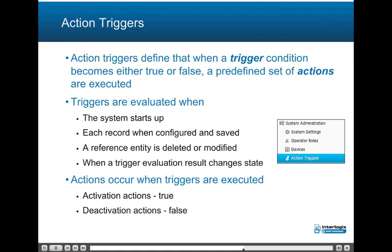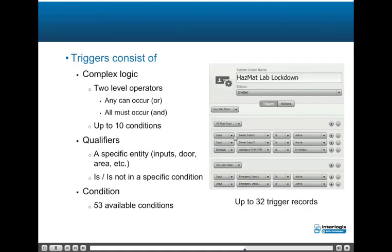Action triggers define that when a trigger condition becomes either true or false, a predefined set of actions are executed. Triggers are evaluated when the system starts up, each record is configured and saved, a reference entity is deleted or modified, or when a trigger evaluation result changes state. Actions occur when triggers are executed: activation actions (true) and deactivation actions (false). Triggers consist of complex logic with two-level operators: any can occur or all must occur, with a maximum of up to 10 conditions. Qualifiers include a specific entity such as an input, door, area, etc., configured as 'is' or 'is not' in a specific condition. There are 53 available conditions, and the system supports up to 32 trigger records.